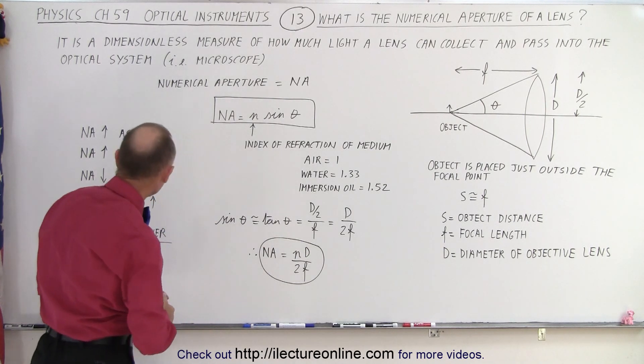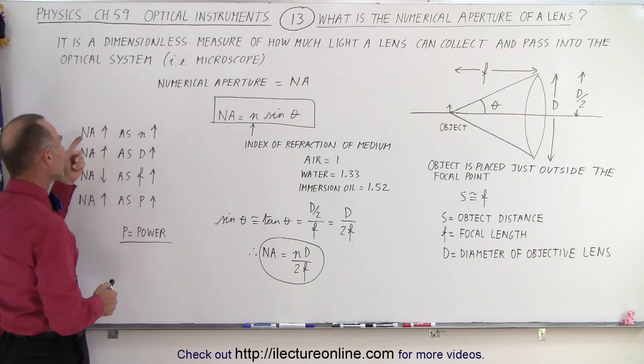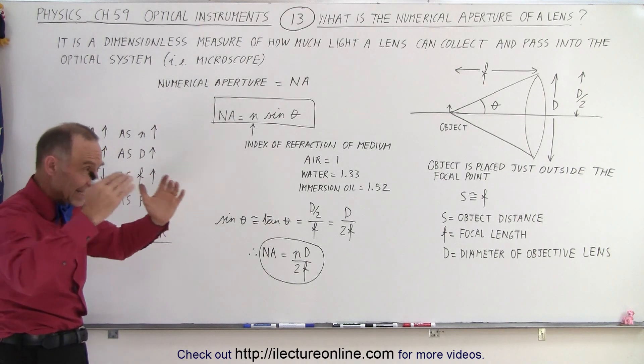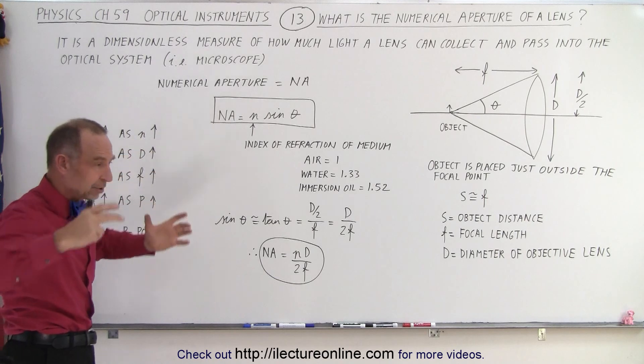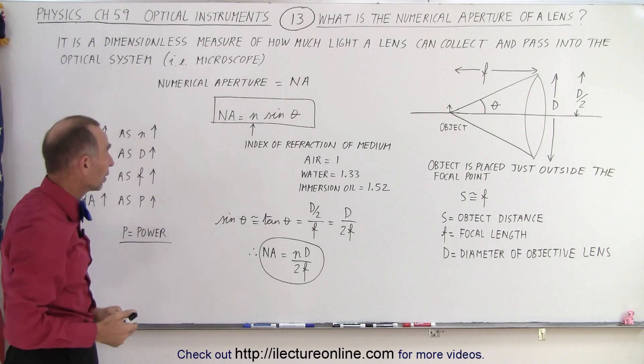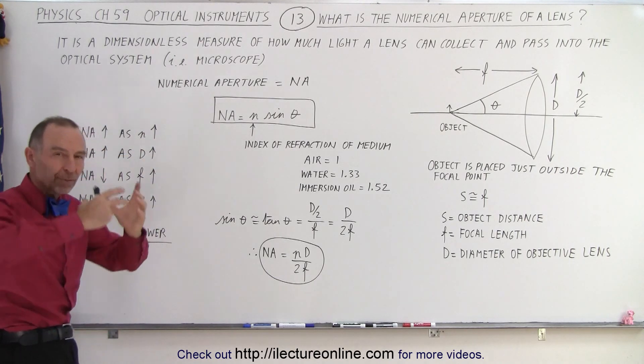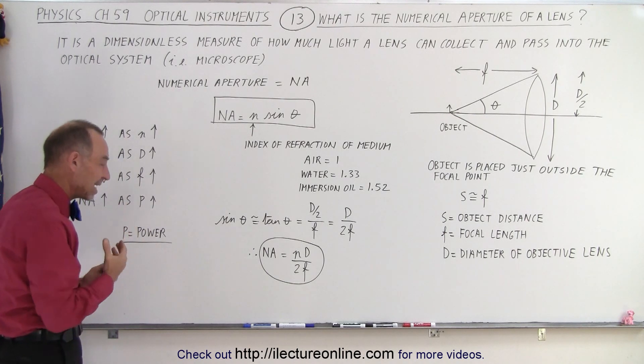So if we think about that, notice that the numerical aperture, again, it's all about letting light into the lens and into the optical system. In this case, the optical system we're dealing with is the microscope. You want to let as much light into the microscope as possible. It's always the key.